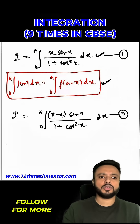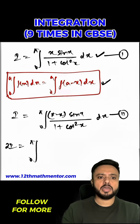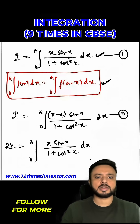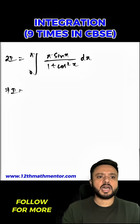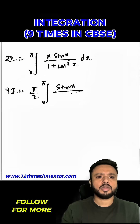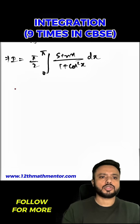Now I am going to add equation 1 and equation 2, so I will get 2I equals the integral from 0 to π of π·sin x over (1 plus cos²x) dx. Hence from here I can say I would be equal to π/2 times the integral from 0 to π of sin x over (1 plus cos²x) dx.